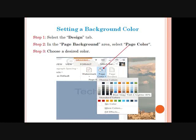Step 1: On the Design tab, in the Page Background group, click the Page Color button. A menu appears which displays swatches of various colors — a palette. You can see there are various colors. Step 2: Click a color in the Themes Colors or Standard Colors palette.